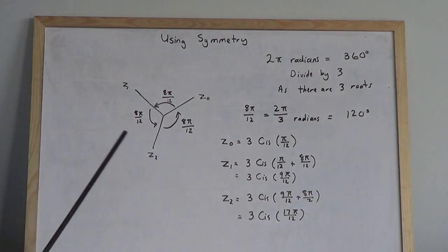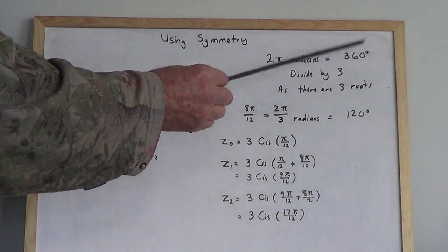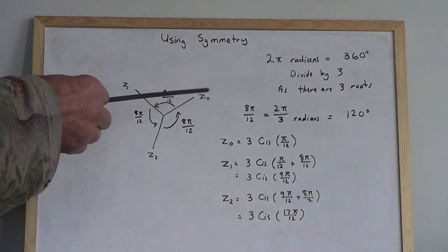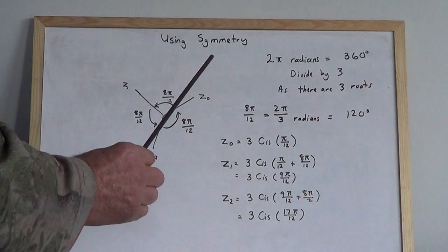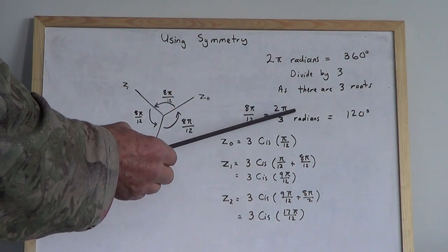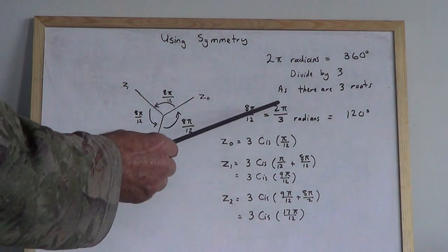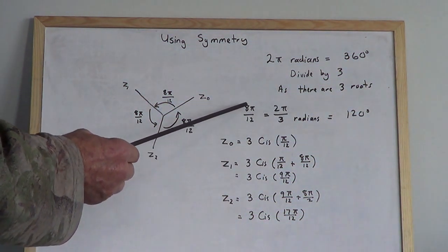That's a complete revolution: 2π radians equals 360 degrees. Now these three angles are all equal, so I just divide that by three, as there are three roots. That'll be 120 degrees or 2π/3. Now we're dealing with π/12, so we're going to be smart. We multiply top and bottom by four, and 2π/3 is the same as 8π/12.